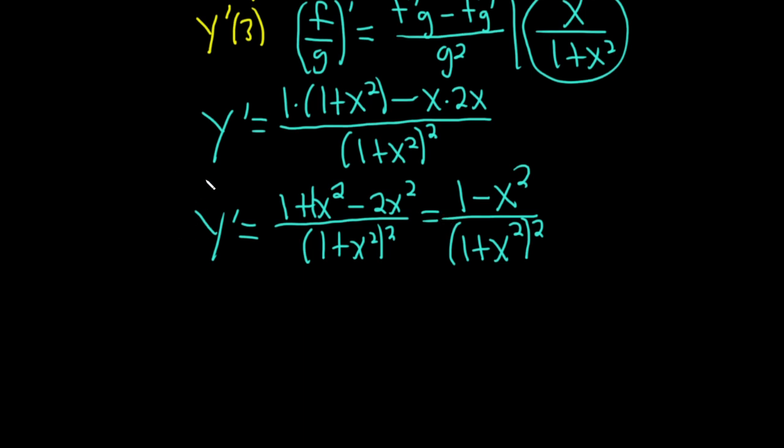We need the derivative at 3, so we have to plug in 3 into all of this. So y'(3) is 1 minus—well, 3² is 9, so it's (1 - 9) over (1 + 9)². This is going to be 1 minus 9, which is -8, over 10², so 100.